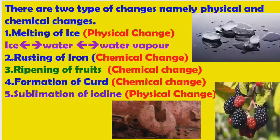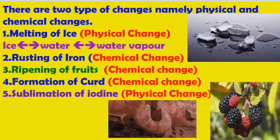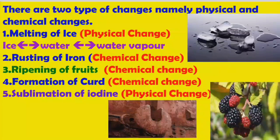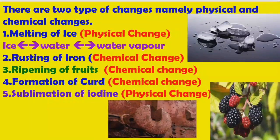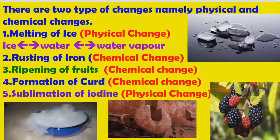Next, sublimation of iodine. A few substances will convert from solid to gas directly. The process of conversion of solid to gas without reaching liquid state is called sublimation. Iodine, ammonium chloride, camphor, and dry ice will undergo sublimation. Sublimation is also a physical change — by cooling, we can get the solid form back. Solid carbon dioxide is called dry ice.